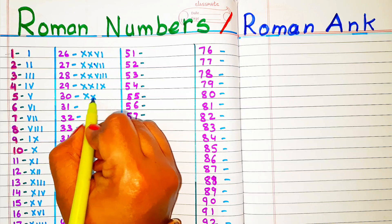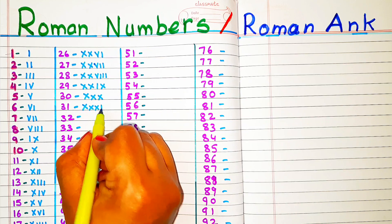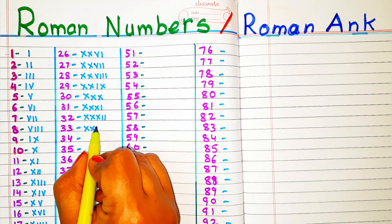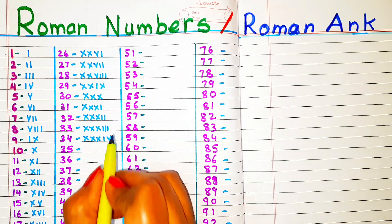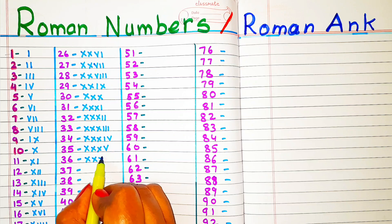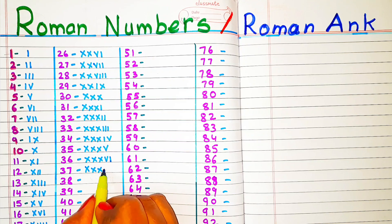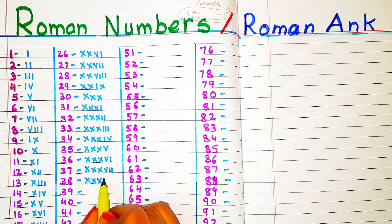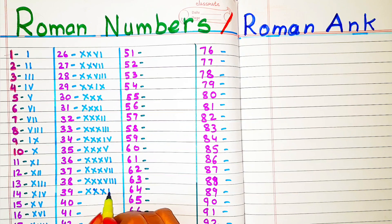31: XXXI. 32: XXXII. 33: XXXIII. 34: XXXIV. 35: XXXV. 36: XXXVI. 37: XXXVII. 38: XXXVIII. 39: XXXIX. 40: XL.